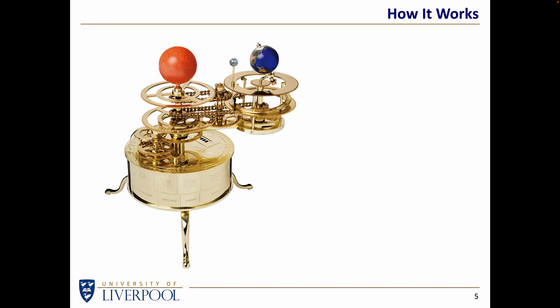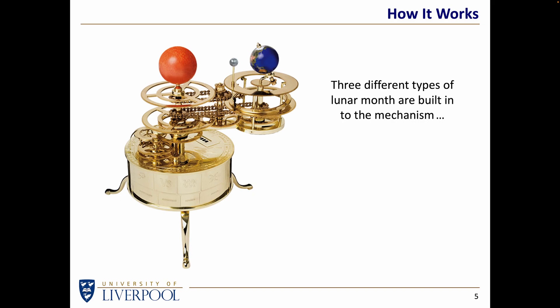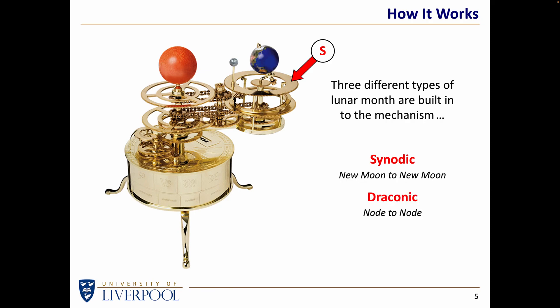So bearing that in mind, let's have a look at the Tellurian itself. Three different types of months are built into the mechanism — none of them are the sidereal month, because the sidereal month is how long it takes the Moon to go around the Earth as seen from an external frame of reference such as the stars. We're interested in the illumination of the Moon and in eclipses, so we're not interested in the sidereal month. We are interested in the synodic month — how long it takes to go from one new Moon to the next — and that is handled by this particular ring, shown by the S there. The synodic month is indicated by how fast that gear rotates, as it's the one that carries the Moon around. We've said that to keep track of eclipses, we have to keep track of where the nodes are, and the draconic month is the length of time it takes the Moon to go from one node back to the equivalent node again.